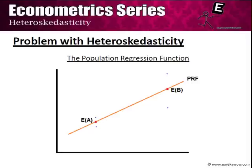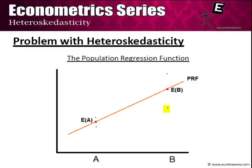Now let us show the problem with heteroscedasticity with a very simple graphical example. Consider x which takes only two values, a and b. Given x equal to a, the expected value of y is ea, but it never really takes this point—instead it takes the values given by the blue dots. The blue dots are the values y can take when x equals a, and the expected value is the middle point given by the red dot. Similarly, we have expectation at b with two blue dots. Note that the variation is much less when x equals a than at x equals b. The line connecting expectation of a and expectation of b is known as the population regression function, or PRF.